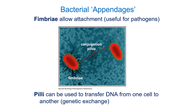Pili connect two bacteria cells — usually one to another — for the purpose of transferring DNA. Fimbriae, by contrast, are typically used by a bacterium to attach to a different cell type, such as epithelial cells. Interestingly, the genes needed to make fimbriae are often found on a plasmid and can be passed through a conjugation pilus. So one spiky cell can pass that characteristic to a naked cell, giving the recipient the ability to stick to epithelial cells.